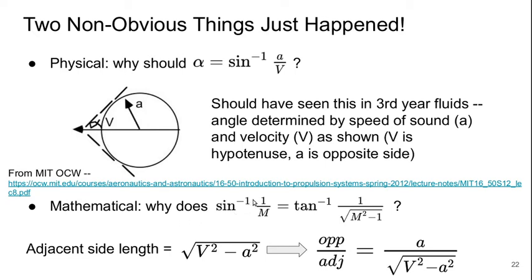Mathematically, it's not that obvious why the sine inverse of one over M, which is what we're dealing with here, is the same thing as the tan inverse of one over the square root of M squared minus one. And this is because the adjacent side length, this side of the triangle here, from the Pythagorean theorem is the square root of V squared minus A squared. And so the opposite over adjacent, which is the basis of the tan function, is A over the square root of V squared minus A squared. And so if I factor out A from the denominator, and I get one, and then the A will cancel out the numerator and the denominator, and I get one over the square root of M squared minus one.